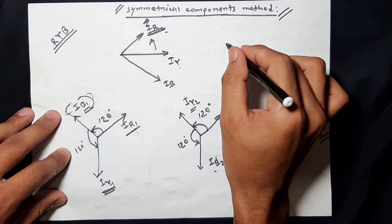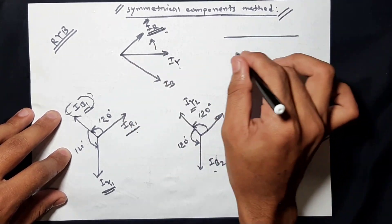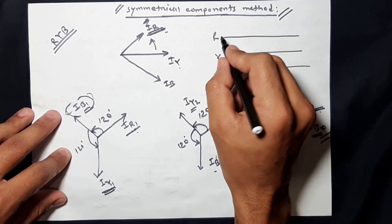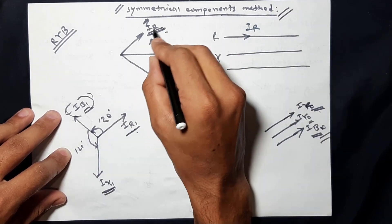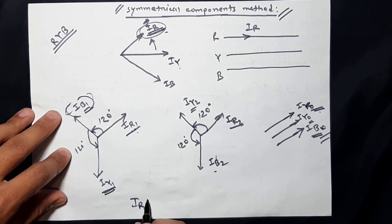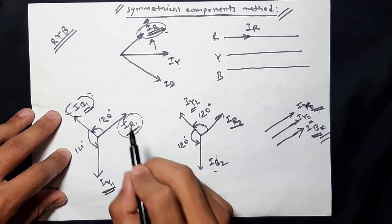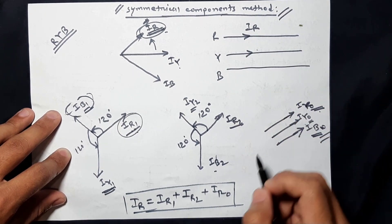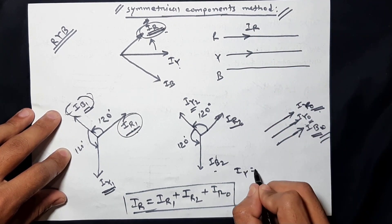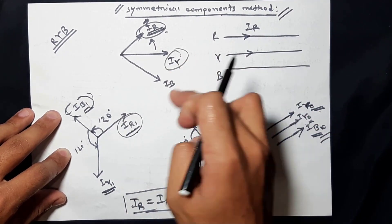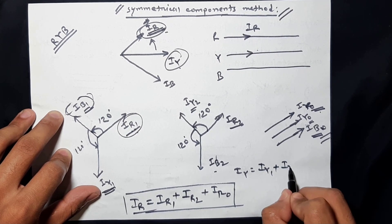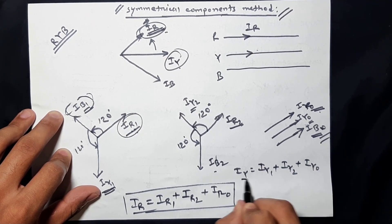Now let's look at the symmetrical component method where we break the line current. The line current has red phase, yellow phase, and blue phase. The red current IR breaks into: IR1 (positive sequence component), IR2 (negative sequence component), and IR0 (zero sequence component). For the yellow phase current IY, it breaks into IY1 (positive sequence), IY2 (negative sequence), and IY0 (zero sequence component).